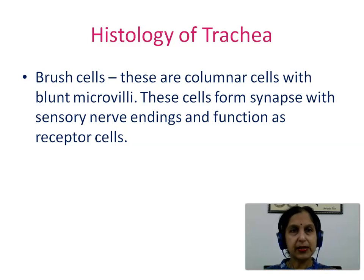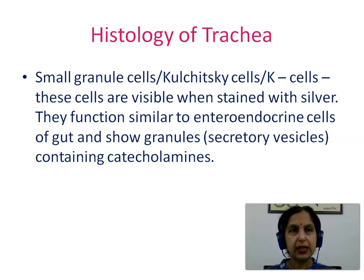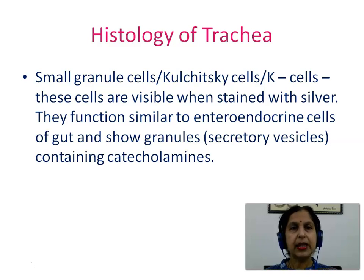Brush cells: these are columnar cells with blunt microvilli. These cells form synapses with sensory nerve endings and function as receptor cells. Small granule cells, also called Kulchitsky cells or K cells, are visible when stained with silver stains. They function similar to enteroendocrine cells of the gut and show granules and secretory vesicles containing catecholamines.